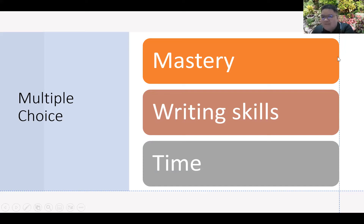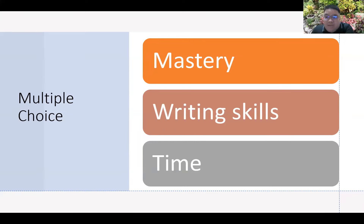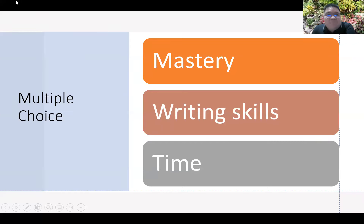Then you need to have your writing skills. When we talk about writing skills, you don't need literary writing skills to create an effective multiple choice examination. But we do need skills especially on spelling, grammar, and subject-verb agreement — those are the important skills. If there are items with wrong grammar, the tendency is that learners will be confused on how to approach those questions. So mastery, writing skills, and time are all important.